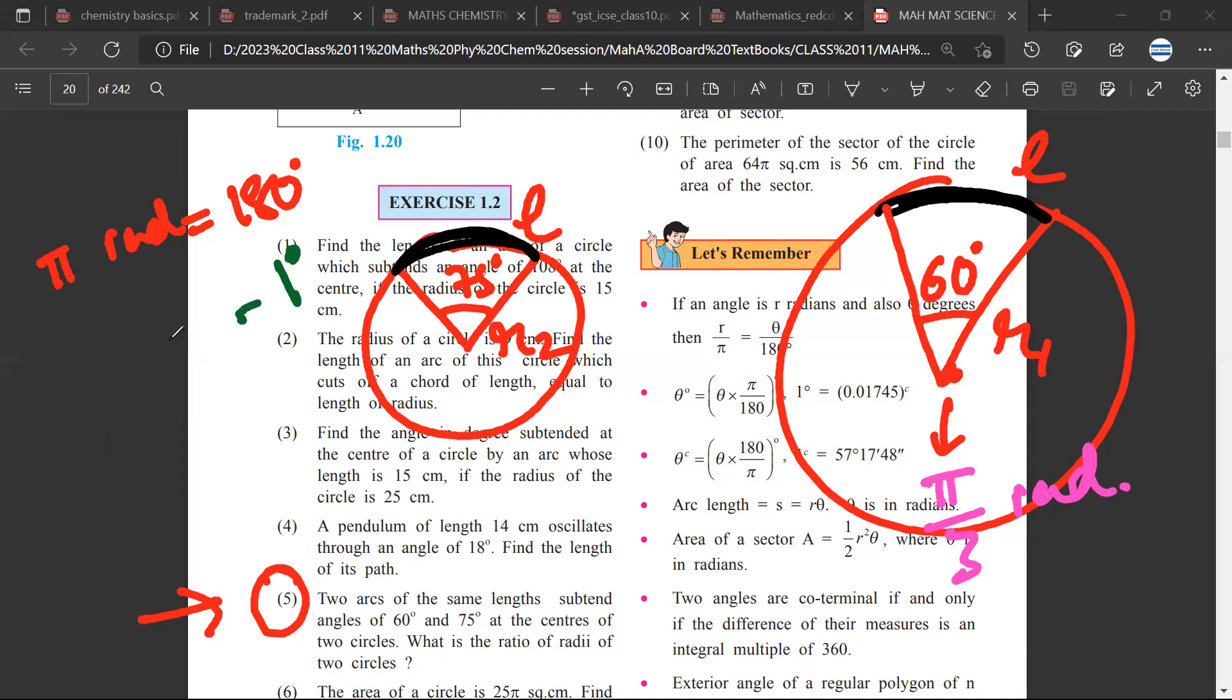And so this would be... 1 degree is equal to π by 180, and 75 degrees would be π upon 180 times 75. This would be 5π/12 radians. Okay, I think are we okay till now?